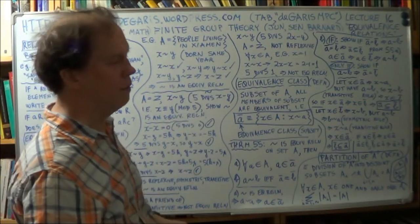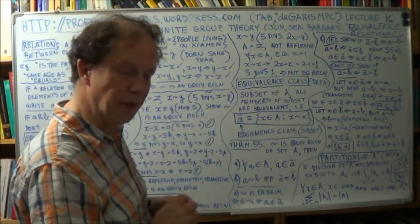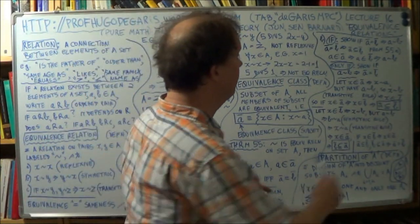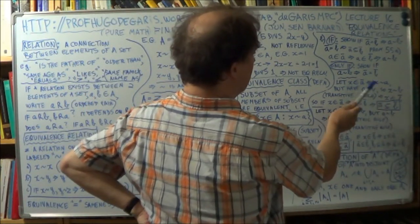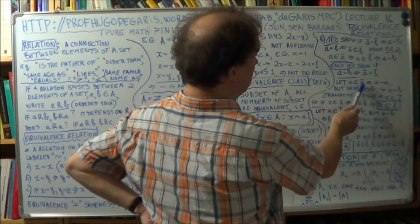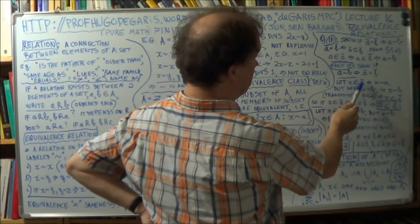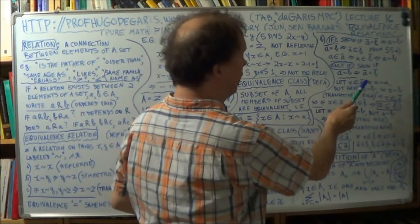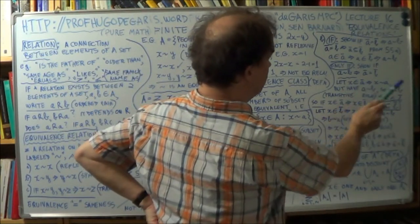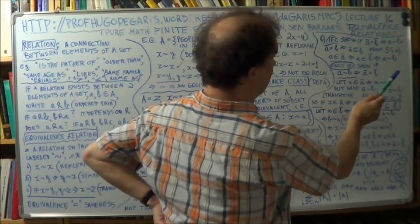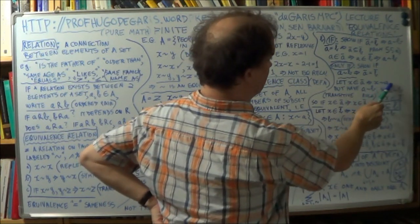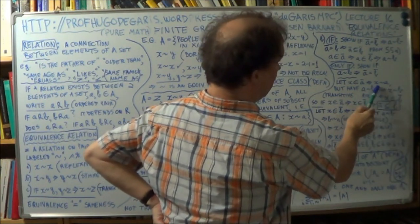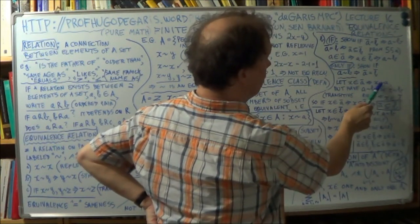Go way back to one of the very first lectures on the definition of a subset. So let x be some element — x belongs to A-bar, the equivalence class of element A. So if that's true, then x ~ A; if x is a member of this, it has to have this equivalence relation with A.